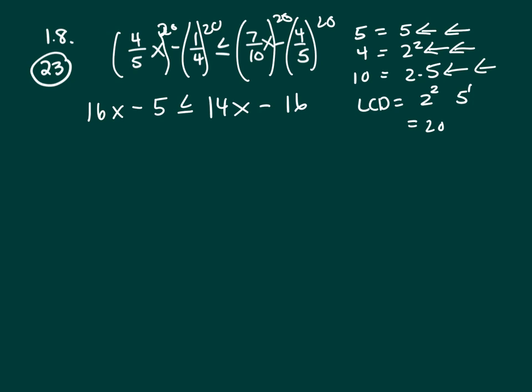Now, when I'm solving an inequality, I like to get the x on the left-hand side. So let's subtract 14x. 2x is less than or equal to, let's add 5 to both sides, and that gives me negative 11. So x is less than or equal to negative 11 halves.